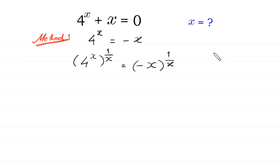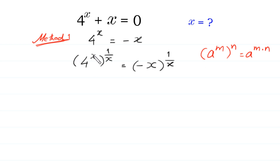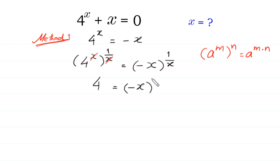Now, according to the property of exponents, a to the power m, whole to the power n, is equal to a to the power m times n. So this power x will be multiplied by this power 1 over x. This x will be cancelled with this x, and on the left side we are left with 4 is equal to negative x to the power 1 over x.